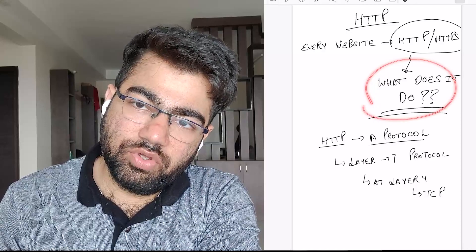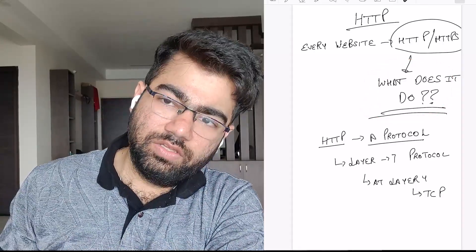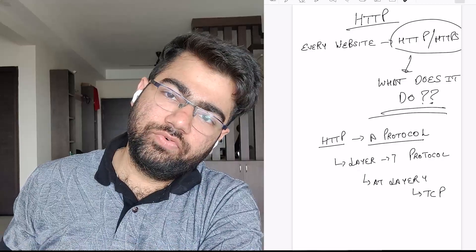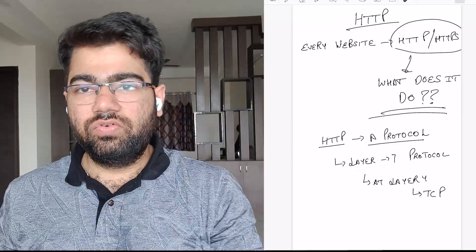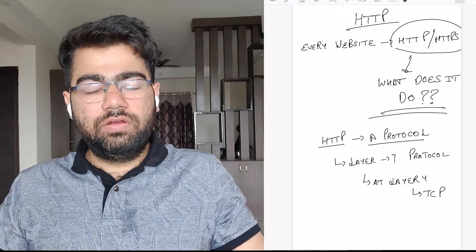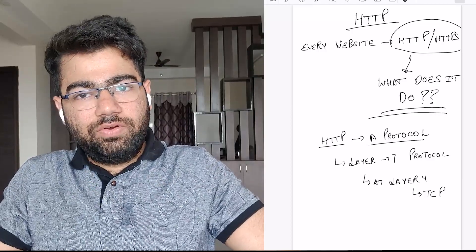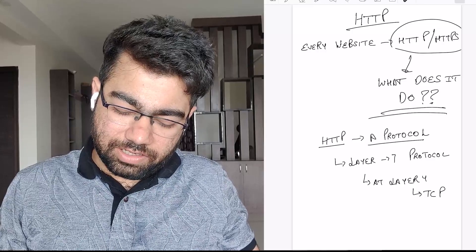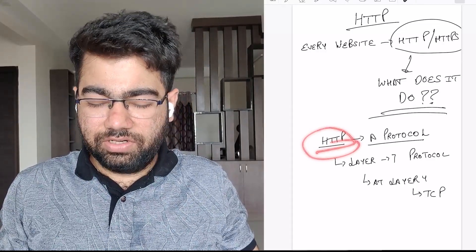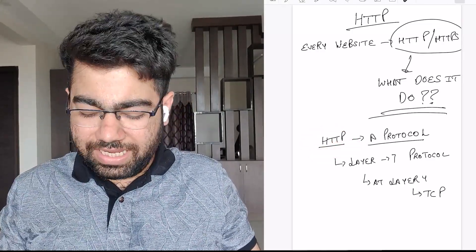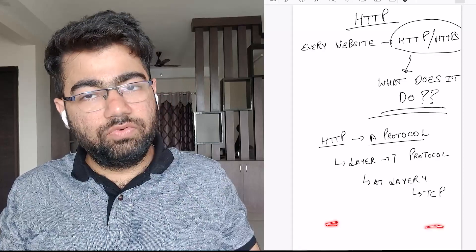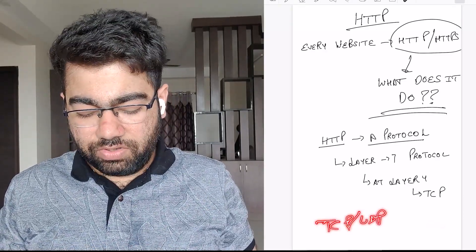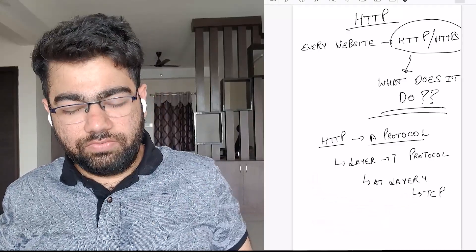So HTTP is nothing but a protocol. It is a Layer 7 protocol, and at Layer 4 it uses TCP. As you may have learned in your network architecture studies, there are seven layers of the network. At Layer 7 we have the application layer where HTTP operates, and at Layer 4, which is the transport layer, we have TCP or UDP. So HTTP uses TCP at Layer 4.